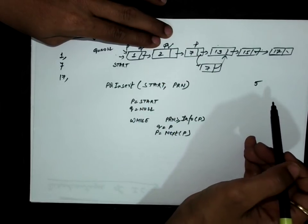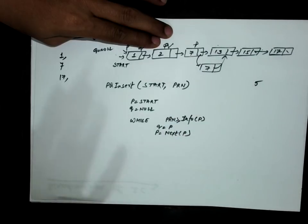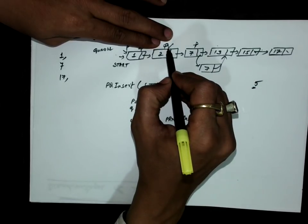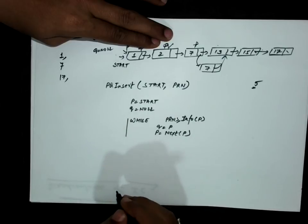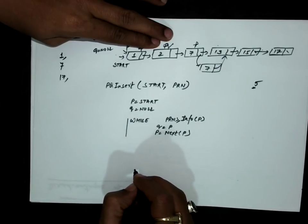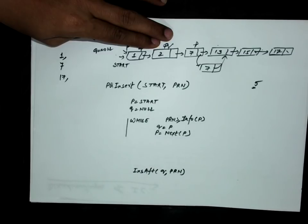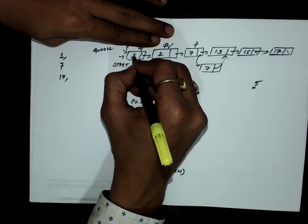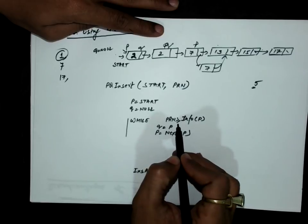The moment 5 is not greater than or equal to info(P), I stop searching — I have found the correct position. I should insert 5 after Q. Once this loop ends, I insert PRN after Q. However, there may be cases where I cannot insert after some node.